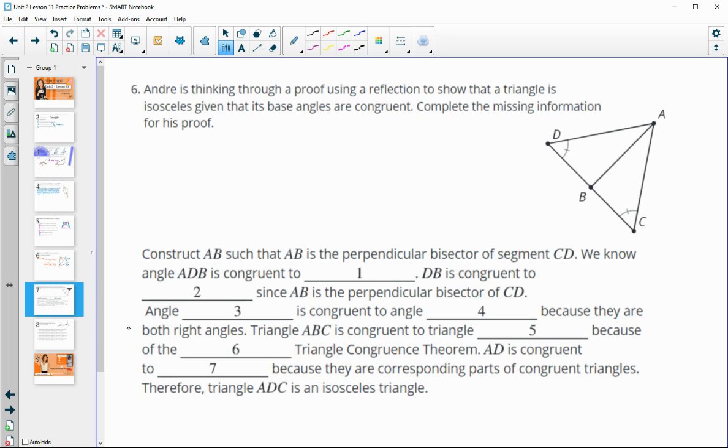Number six, Andre is thinking through a proof, using a reflection to show that the triangle is isosceles, given that the base angles are congruent. So, given that these base angles are congruent, he's trying to prove that this side is congruent to this side, and he's done that below. So, let's help fill it in. So, construct AB, so we're putting in an auxiliary line here. So, auxiliary line AB, so that AB is the perpendicular bisector of CD, so that's how we're defining it.